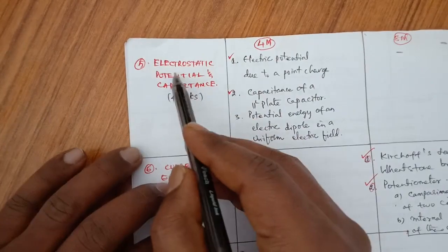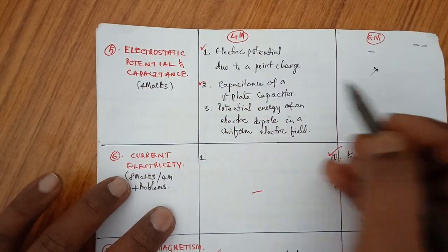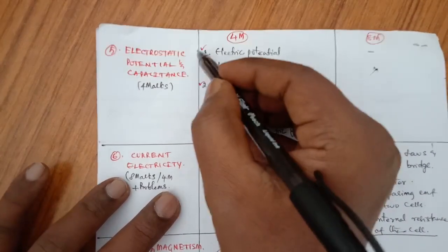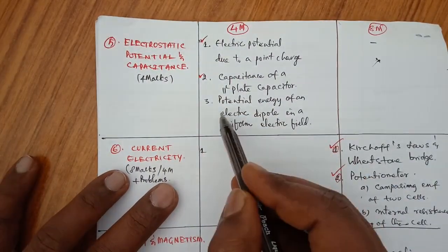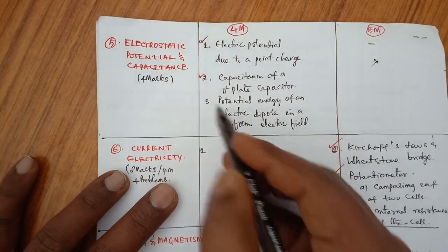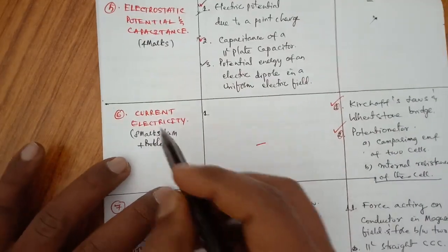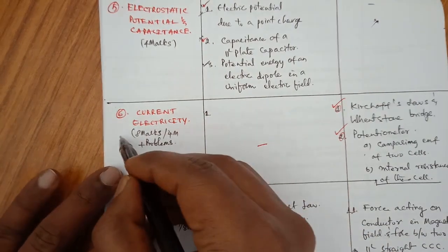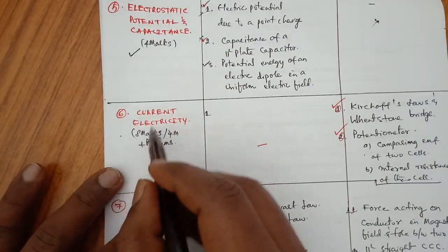Fifth chapter is Electrostatic Potential and Capacitance. There is no 8 marks question from this chapter. For 4 marks: electric potential due to a point charge — very, very important; capacitance of a parallel plate capacitor; and potential energy of an electric dipole in a uniform electric field — sometimes important. The weightage is 4 marks.